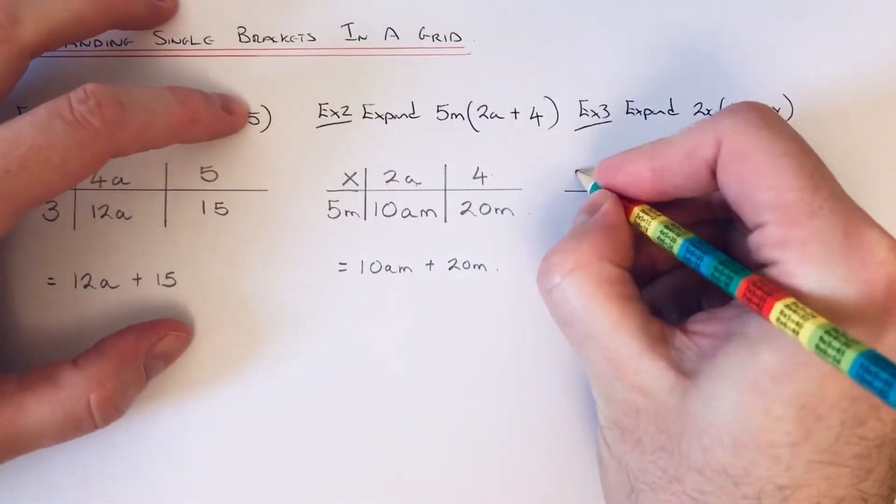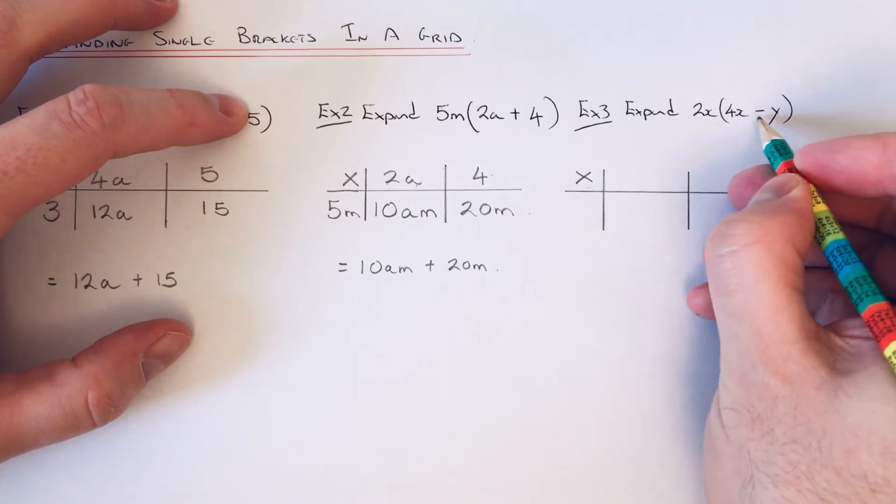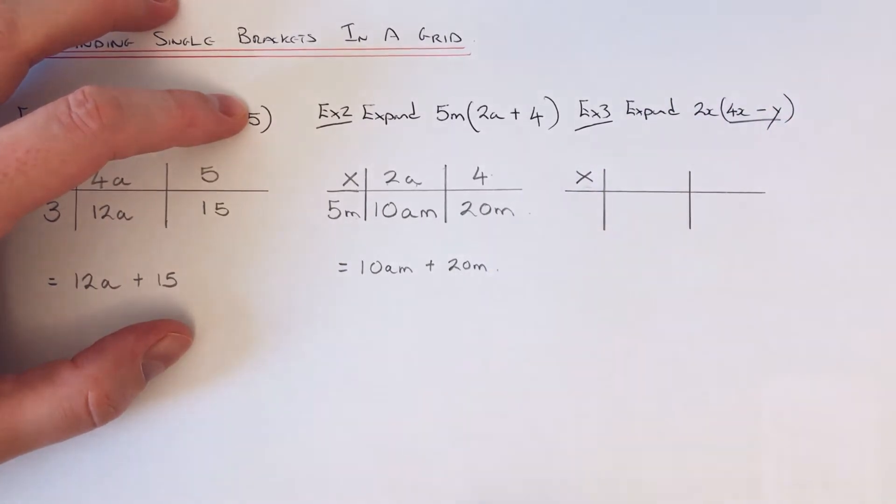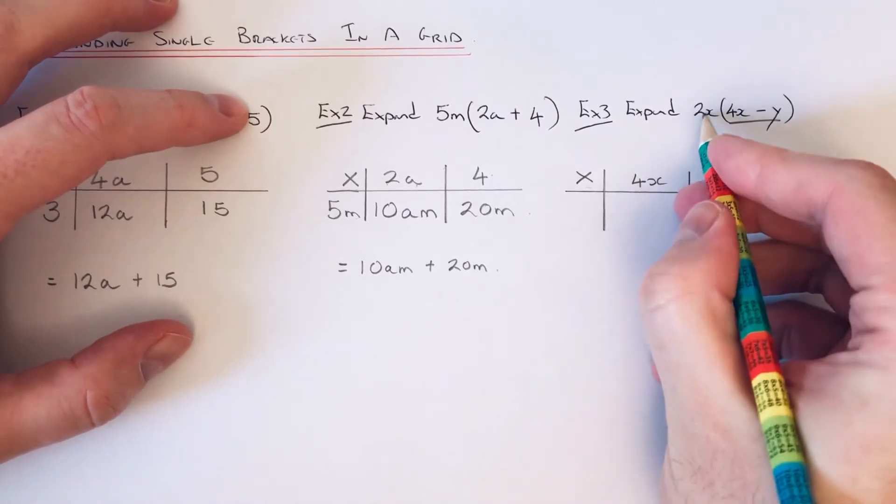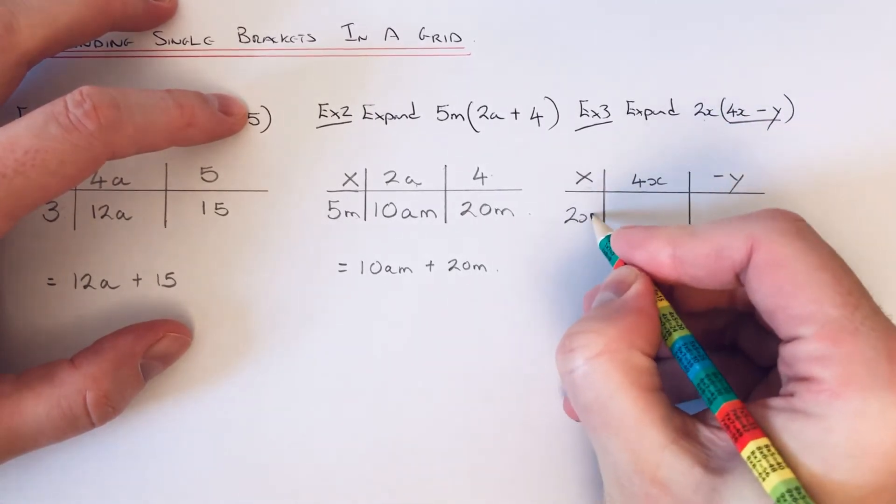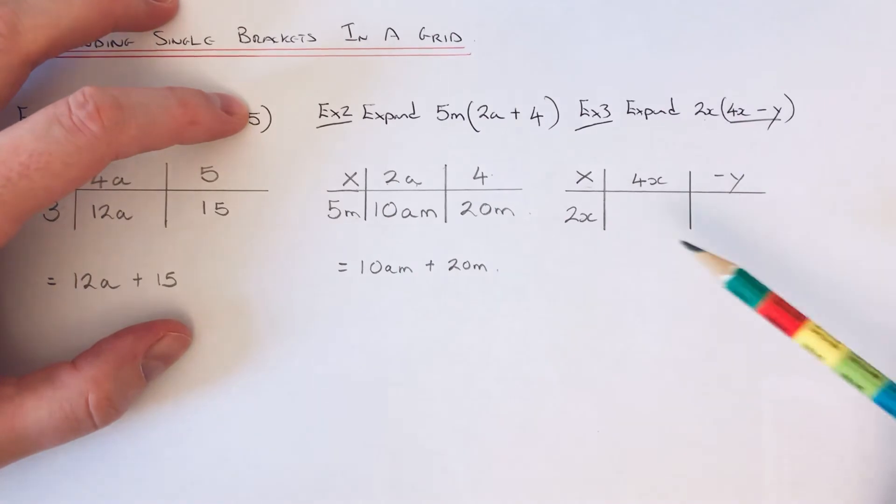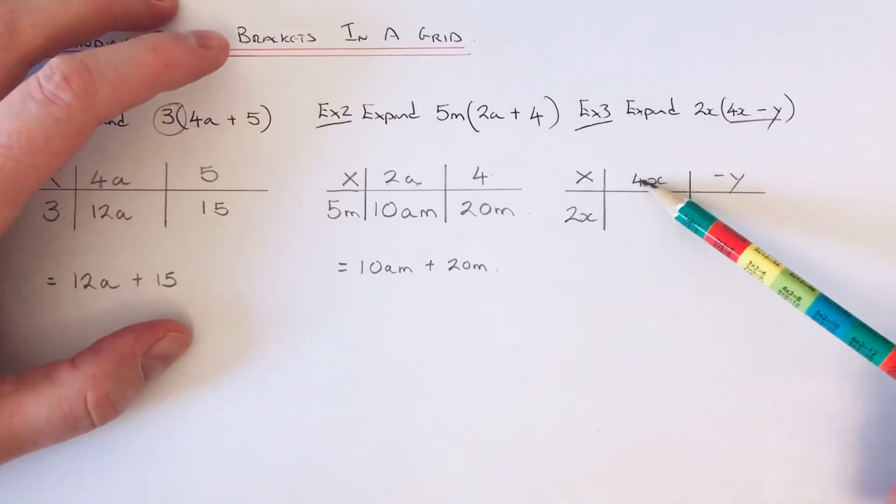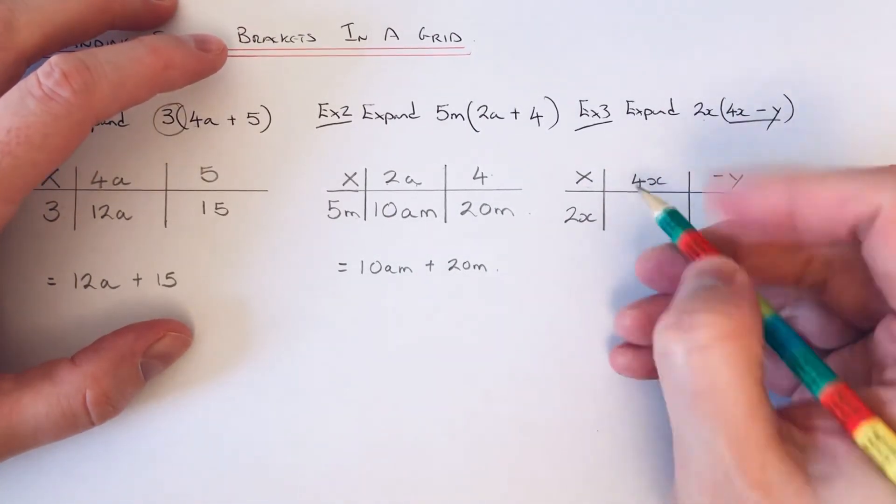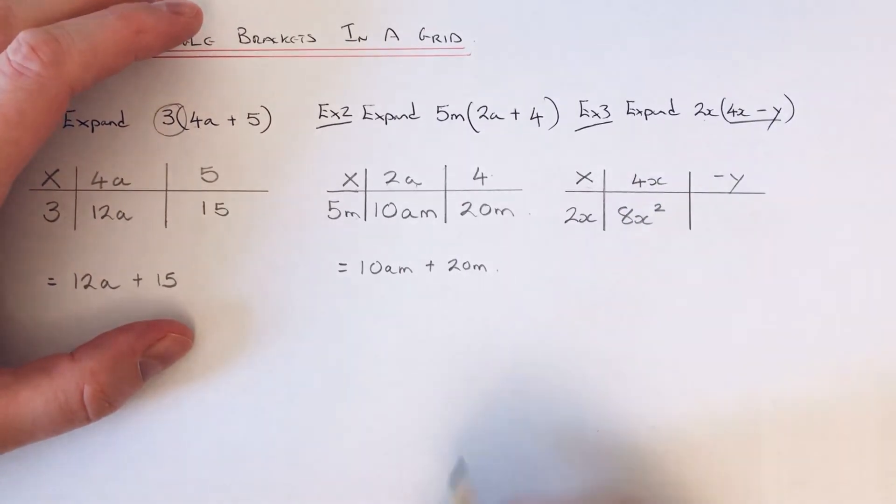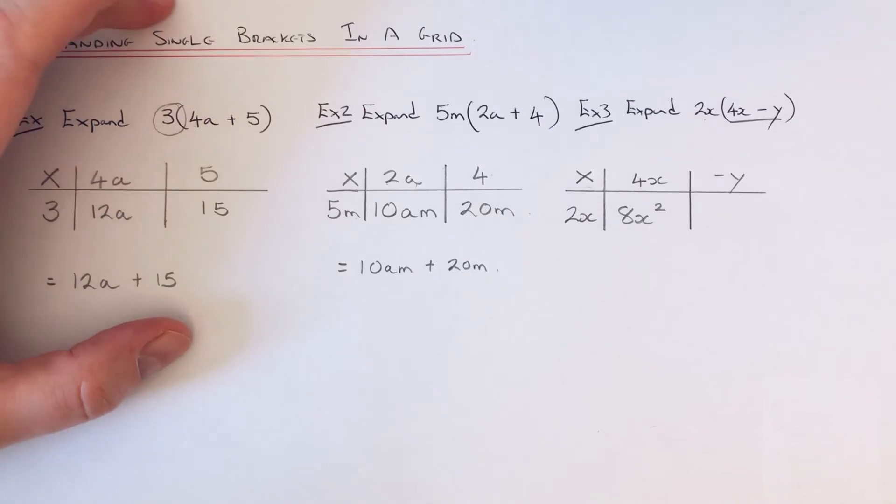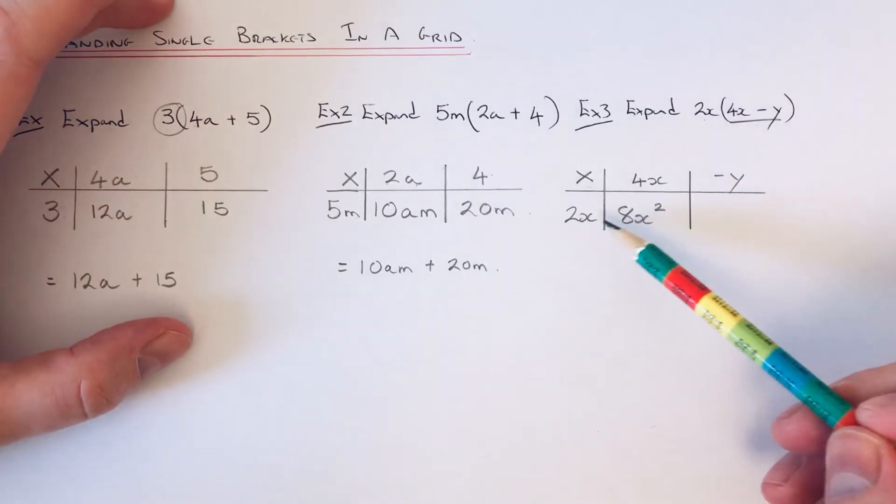Times sign in the corner. Split the terms in the bracket along the top and put the 2x here. We do 2x times 4x. Well, 2 times 4 is 8, and x times x is x², so our first term is 8x².